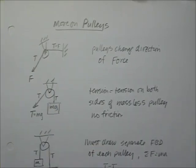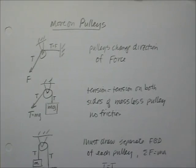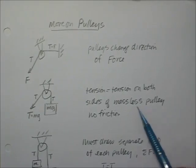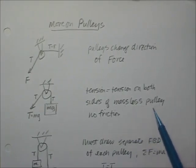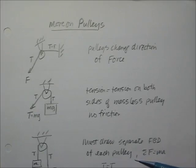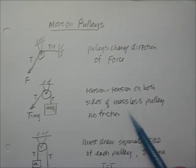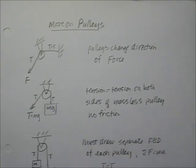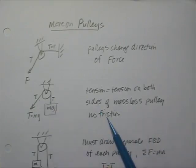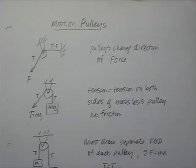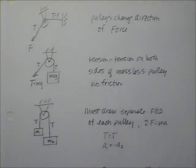It doesn't really add anything. Now in this case, we're talking about massless pulleys with no friction. Later in the course, we'll talk about pulleys that actually have mass and may have some friction, and then these assumptions don't apply anymore. But with massless, frictionless pulleys, the tension is going to be equal on both sides.